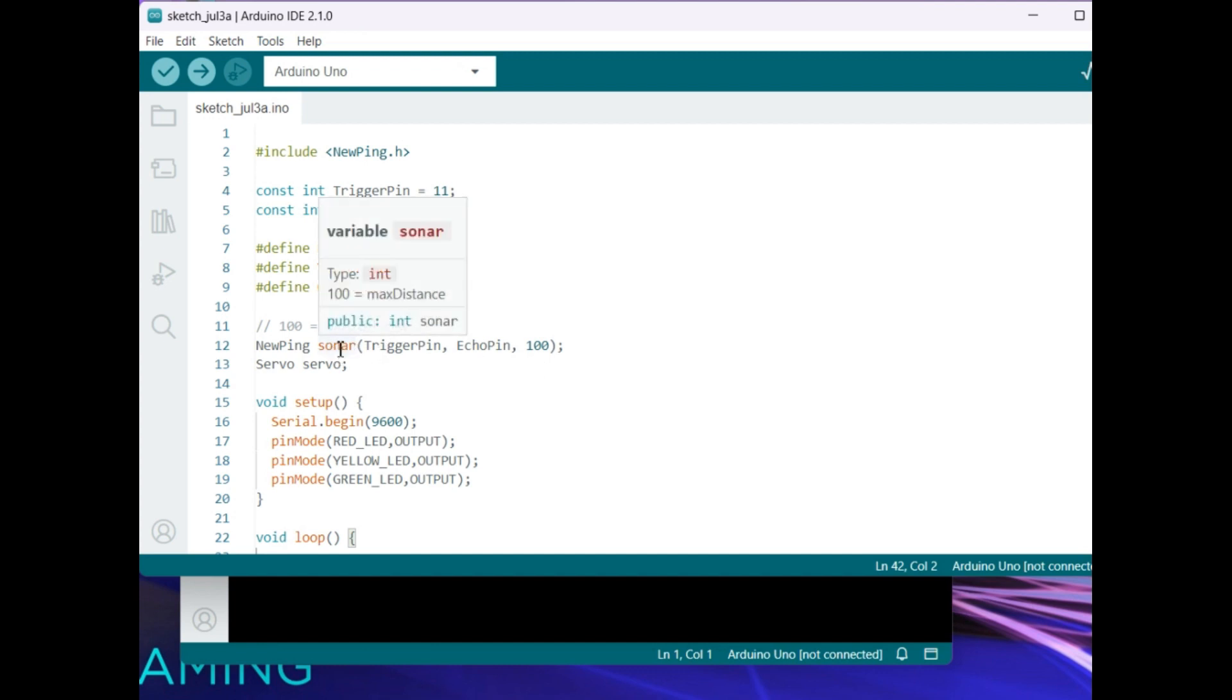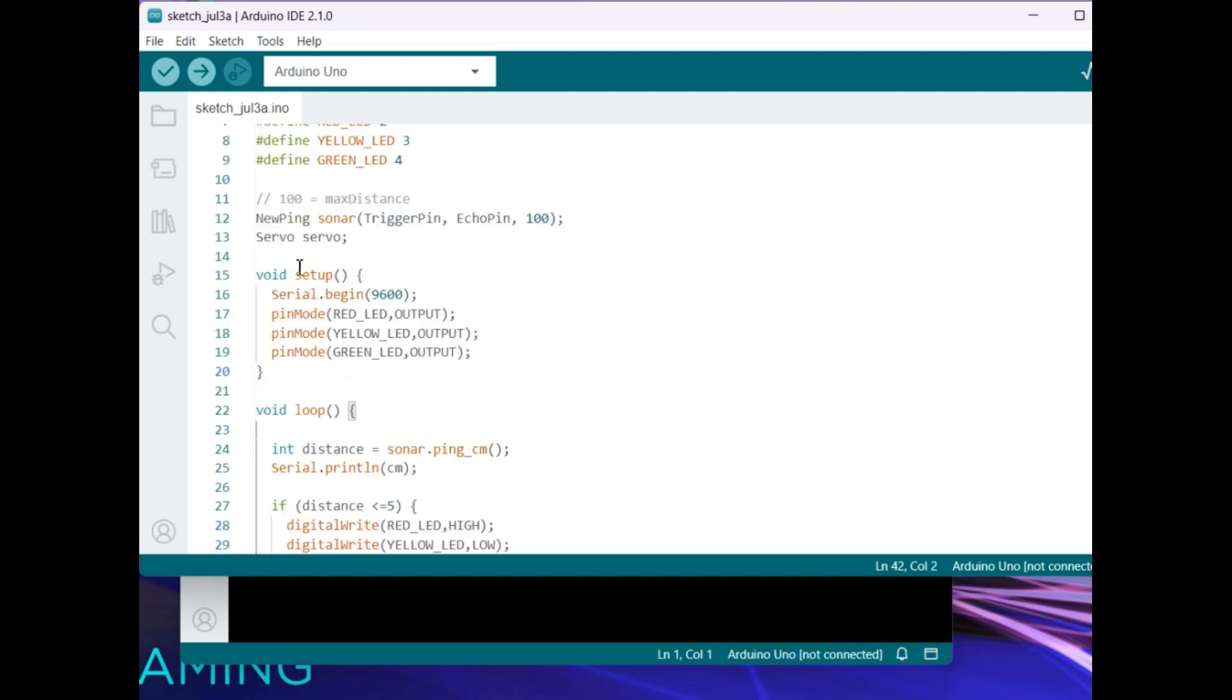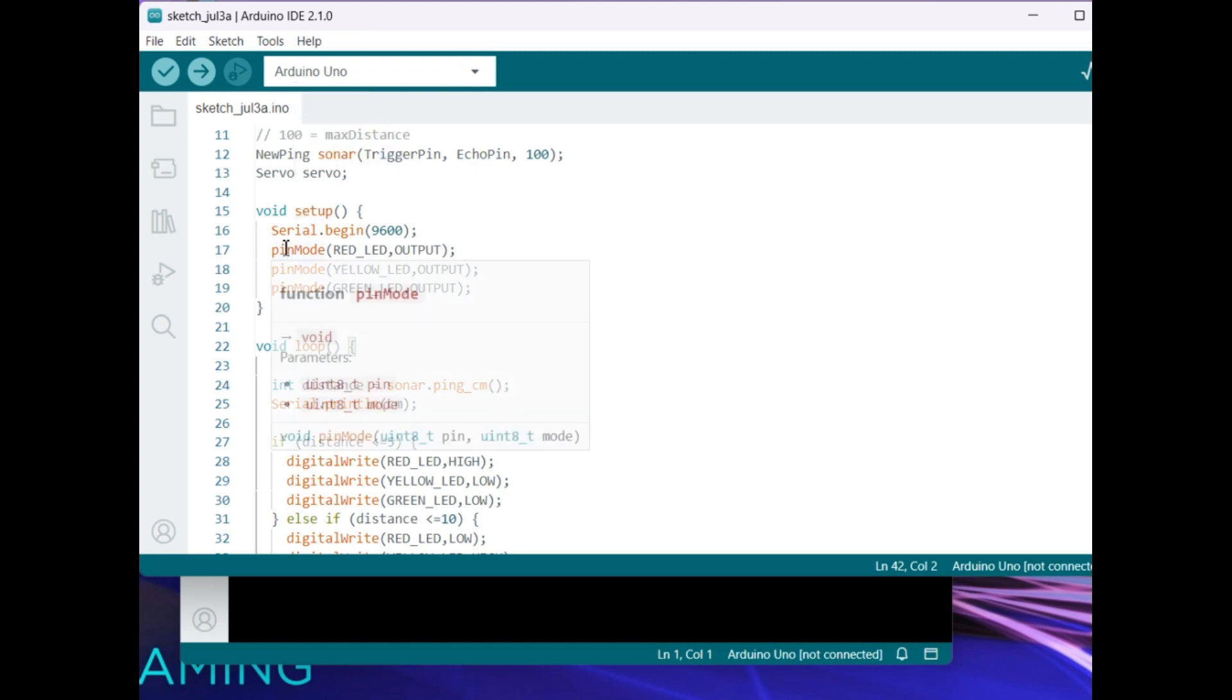So this is the initialization to the given things, friends. Next one will be the setup. The setup is serial begin. Pin mode, we are indicating the red LED as output, yellow LED as output, green LED as output.